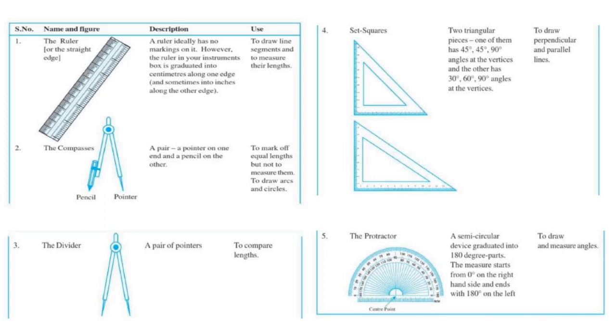Further, we are going to learn about set squares. Set square includes two triangular pieces. One of them has 45 degree, 90 degree, and 45 degree angles at the vertices, while the other has 30 degree, 60 degree, and 90 degree angles at vertices. Set square is used to draw perpendicular and parallel lines.